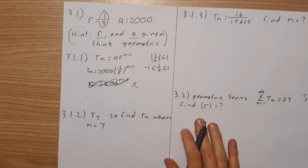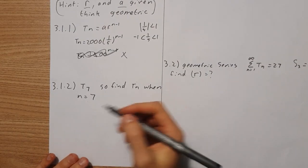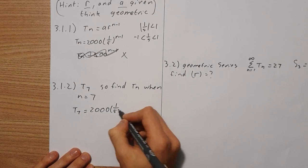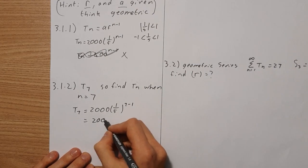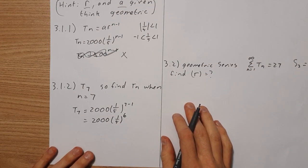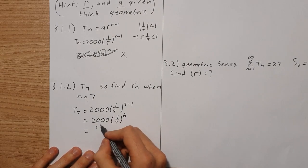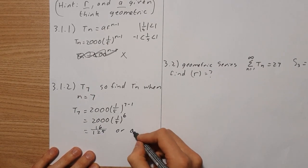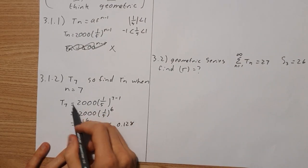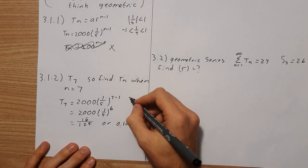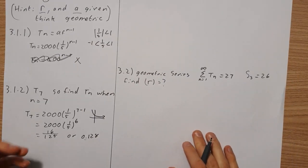Now let's look at 3.1.2. It's asking us to find T7, so find Tn when n equals 7. Pretty straightforward. T of 7 is going to be 2000 times 1 over 5 to the 7 minus 1, which means we'll have 2000 times 1 over 5 to the power of 6. If you plug that into your calculator, you're going to get a value of 16 over 125, or in decimal points it's 0.128. So we started with our first term of 2000 and after seven terms we're already sitting at 0.128. This series is converging.